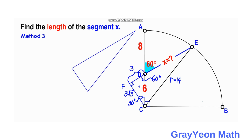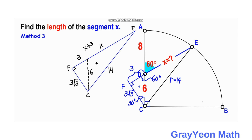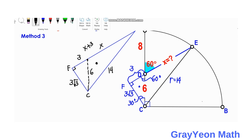Next, we isolate right triangle FEC. FC = 3√3, segment FE is composed of FD = 3 and DE = X, so FE = X + 3. The hypotenuse CE is the radius of the quarter circle, which is 14 units. We apply the Pythagorean theorem to this right triangle.